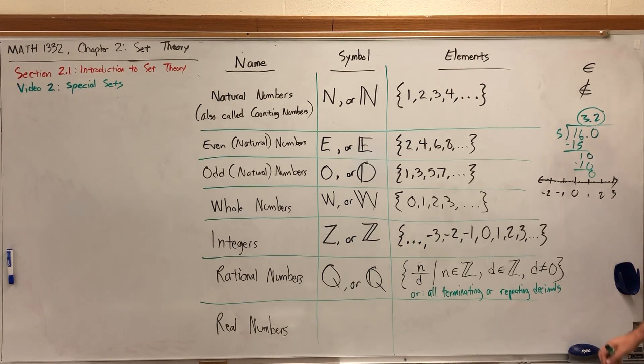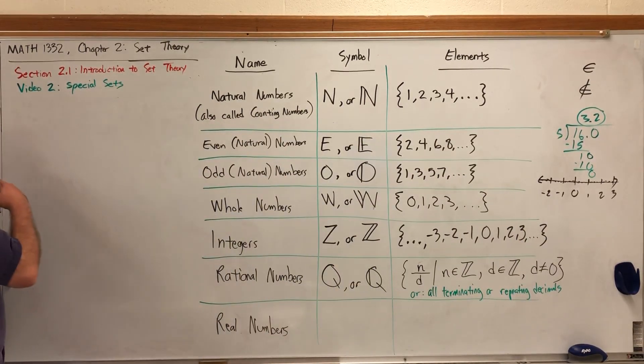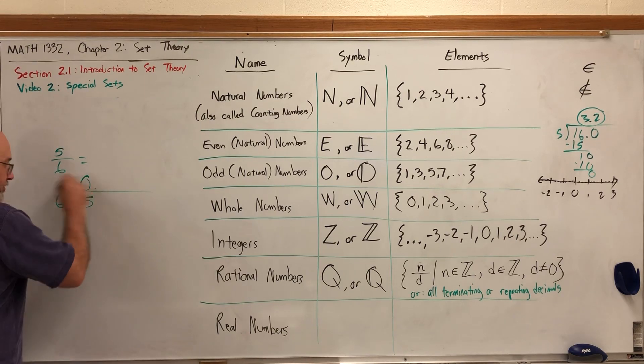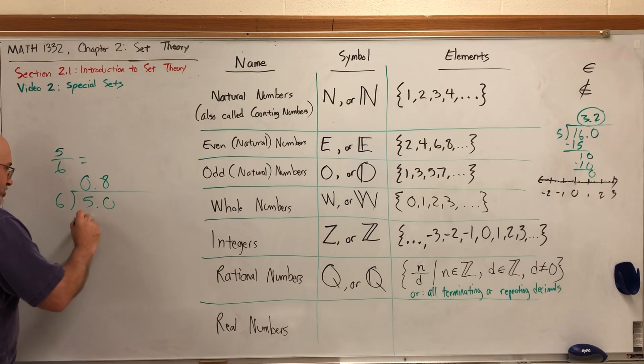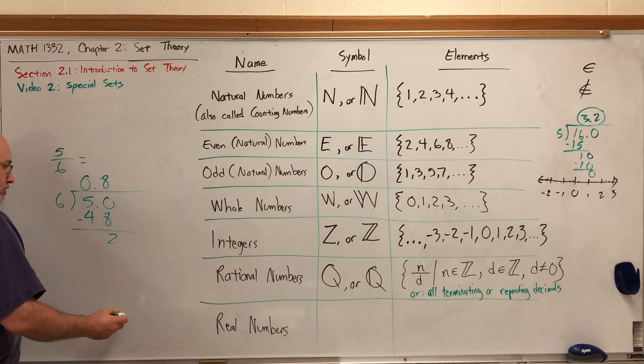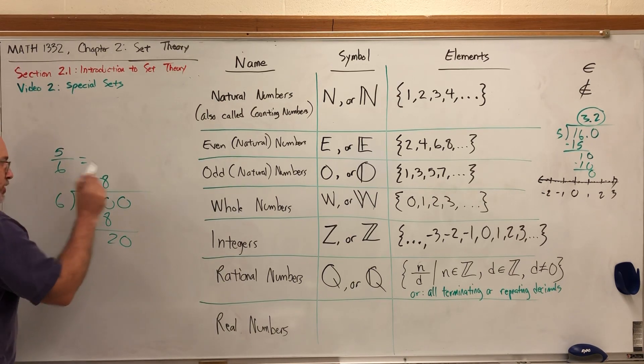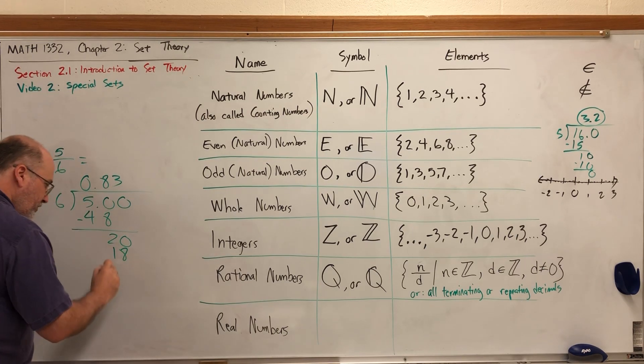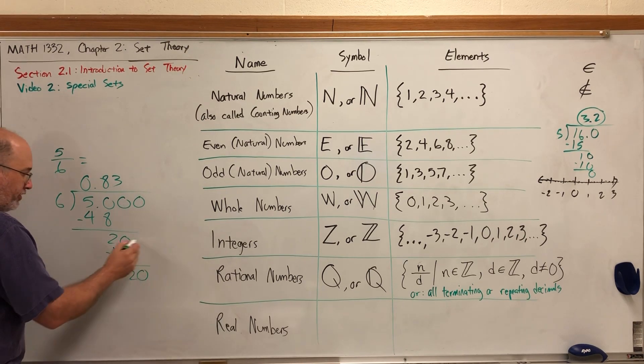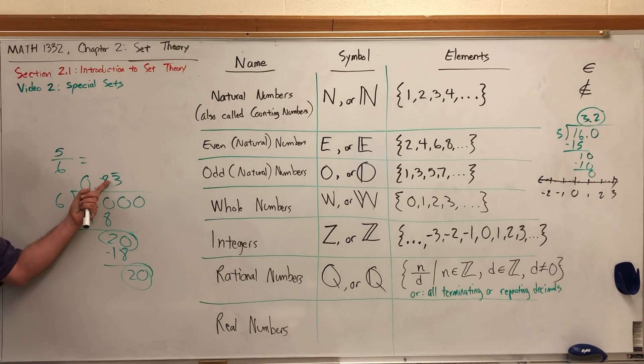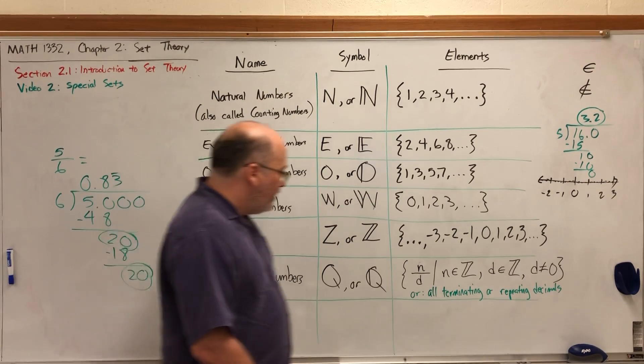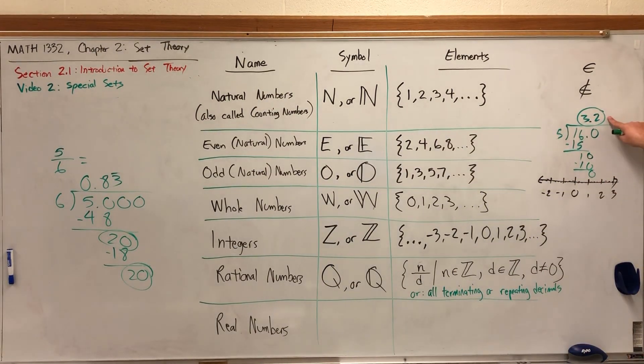Some fractions don't have terminating decimals. If I asked you what is 5 sixths as a decimal, we could set up a division problem. 6 goes into 50 eight times. 8 times 6 is 48. 50 minus 48 is 2. Bring down the next 0. 6 goes into 20 three times. 3 times 6 is 18. 20 minus 18 is 2. We're just going to keep repeating this 3 over and over again. As a decimal, 5 sixths is a repeating decimal. Every fraction involving integers will either end or eventually repeat.